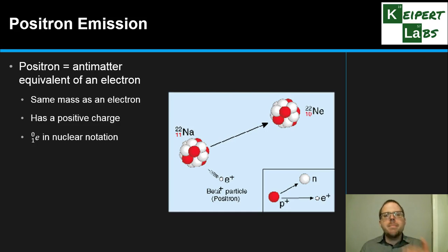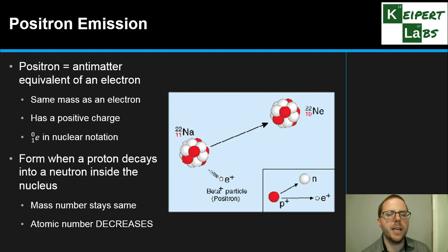So a positron is the antimatter equivalent of an electron. When we're talking about matter and antimatter, they are identical in all respects, except they're opposite in one key area. So a positron has the same mass and other characteristics as an electron, but it has a positive charge - a relative charge of plus one rather than minus one. So when we're writing in nuclear notation, we would write it like this, with a zero and a one, and then the E for electron. And so positron emission is a process that can happen when we're taking a proton and it decays into a neutron inside the nucleus. What it does is it gives out this positron during this process. So rather than giving out an electron, it actually gives out a positron instead. The mass number stays the same, the atomic number decreases, rather than increasing like it does in beta decay. So positron emission and beta decay are kind of companion processes that are the flip side of each other.